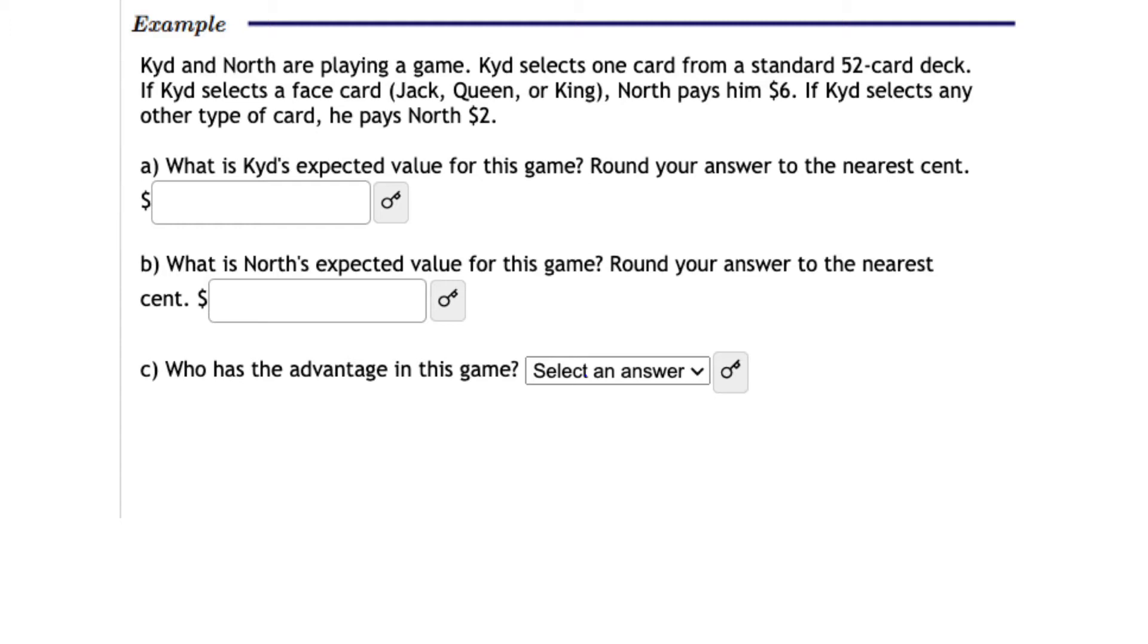So let's start with Problem A. What is Kid's expected value for this game? Notice we're looking for an expected value. And when you look for an expected value, you're looking for a combination of the wins and the losses. So we're going to write down from Kid's perspective what his expected value would be. I'm going to write expected value Kid to remind myself that I'm looking from his perspective. So from Kid's perspective, he wins $6 from North every time he selects a Jack, Queen, or King. So he gains a positive $6 every time he selects a face card. So what I need to do is take 6 times the probability that he draws a face card.